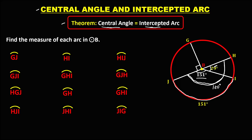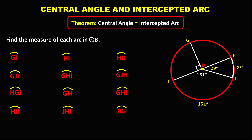So this angle is equal to 29 degrees. By the central angle theorem, this arc is also 29 degrees. Then since this angle is 90 degrees, its intercepted arc is also 90 degrees. And since the straight angle is 180 degrees, 180 minus 90 gives us 90 degrees, so this arc is also 90 degrees.